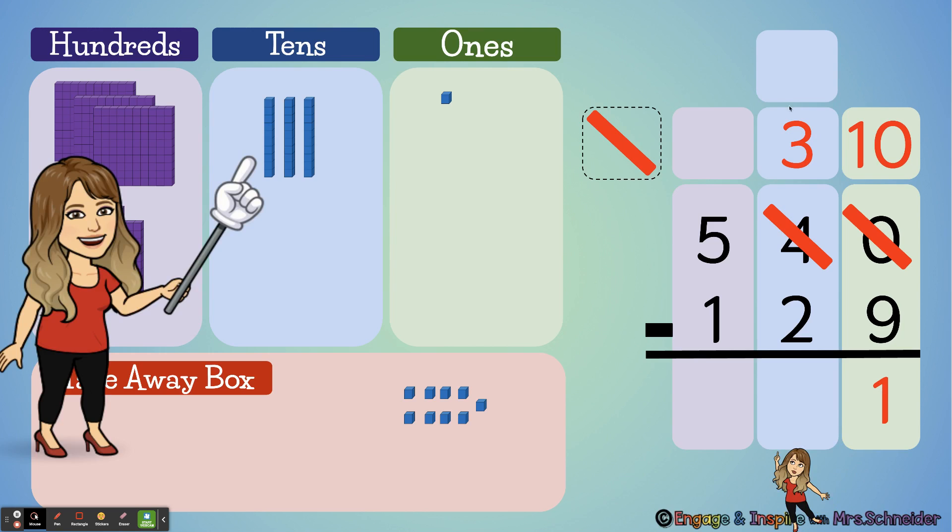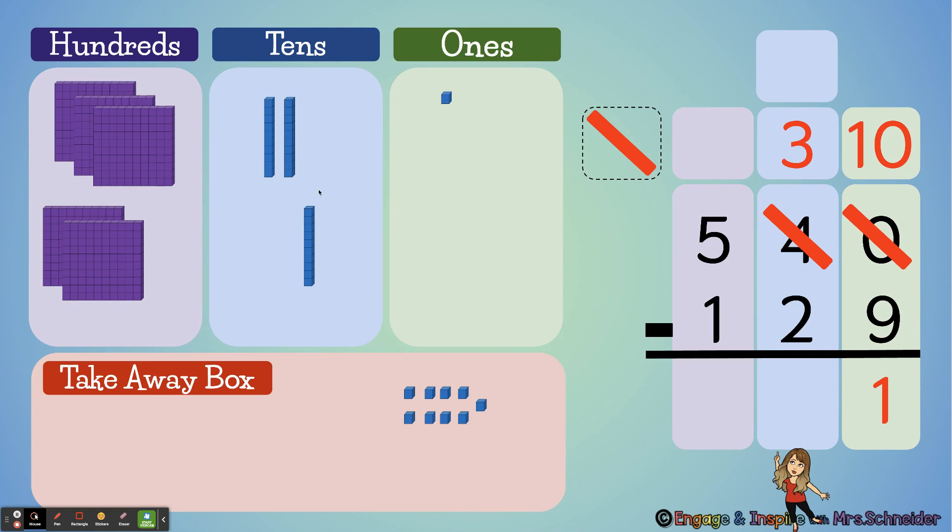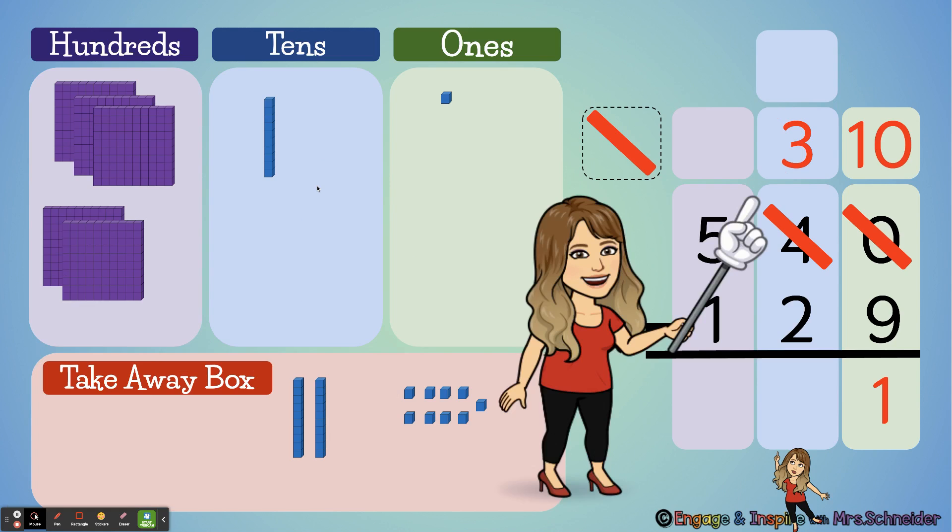We're going to ask ourselves, is there more on the top or more on the floor? Well, three is more than two. If I have three I can give two away, no problem, right? So if there's more on the top, no need to stop. I can just subtract because I have enough. So three minus two: one, two. All right, so how many tens do I have left? Right, I have one left because three minus two equals one.